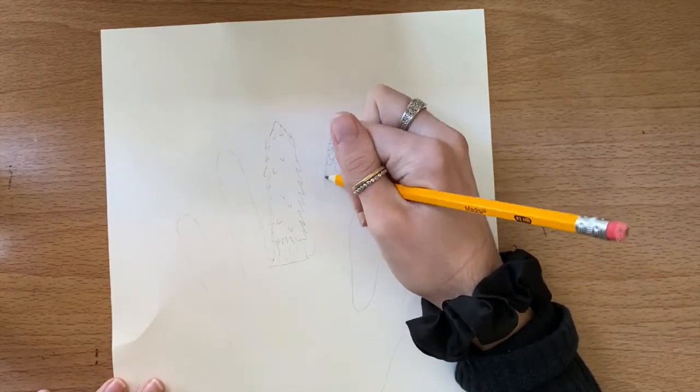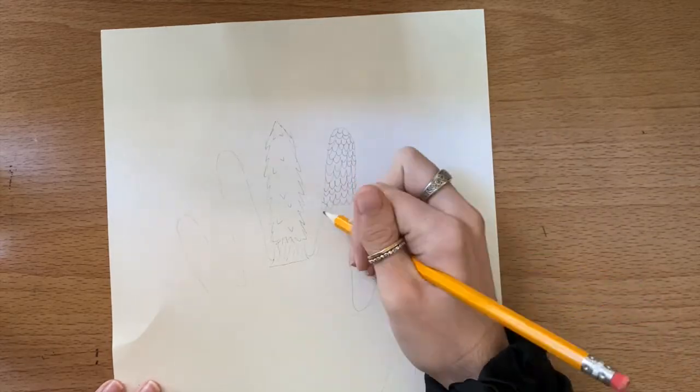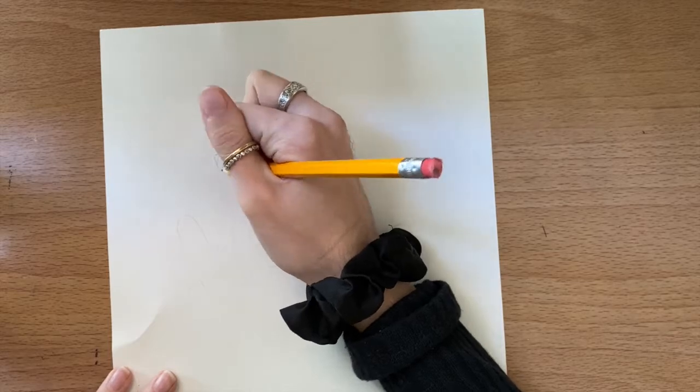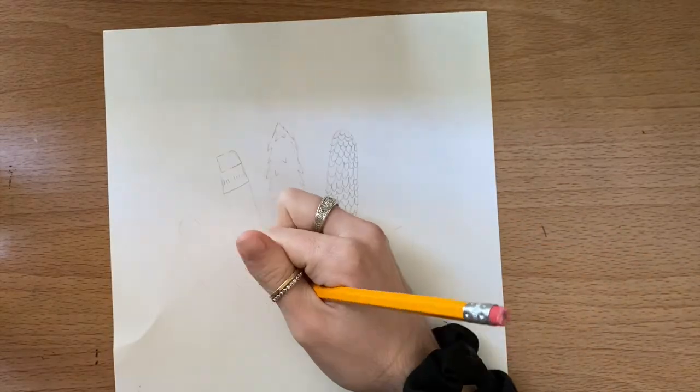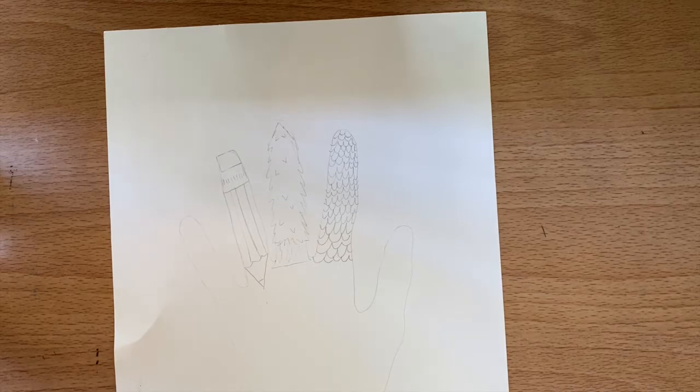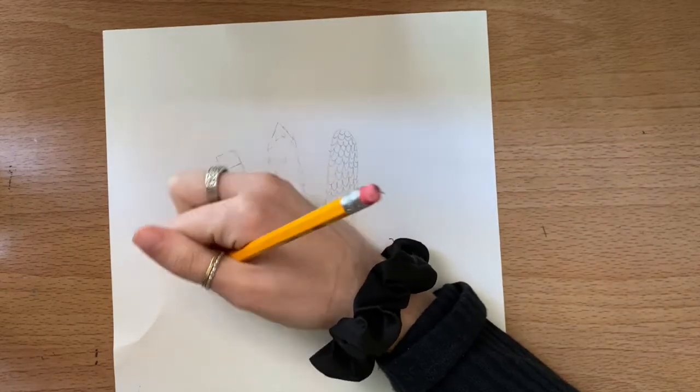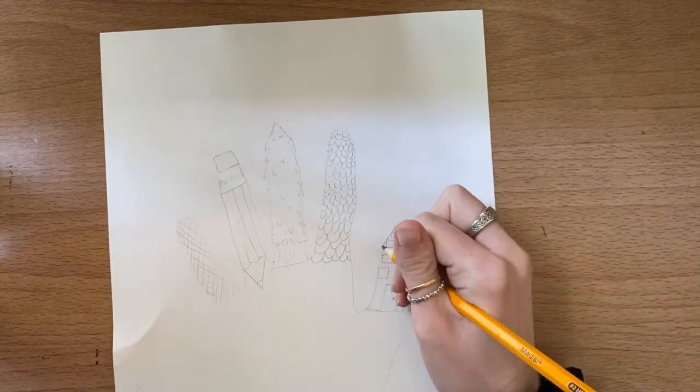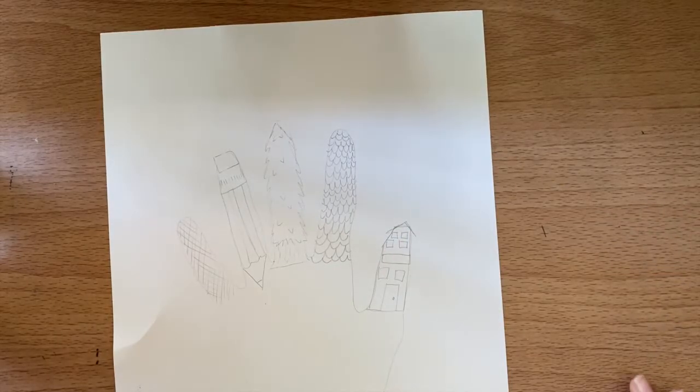Instead of an object, you can also do a texture or a pattern as well. Like this is kind of some fish scales that I'm doing across it. So it's your choice as long as you make each thing different. And it doesn't matter if it's part of a theme or all random. It's up to you. It's your surrealism. And you get to let your creativity run wild. Pause this video here until you have all of your fingers done.